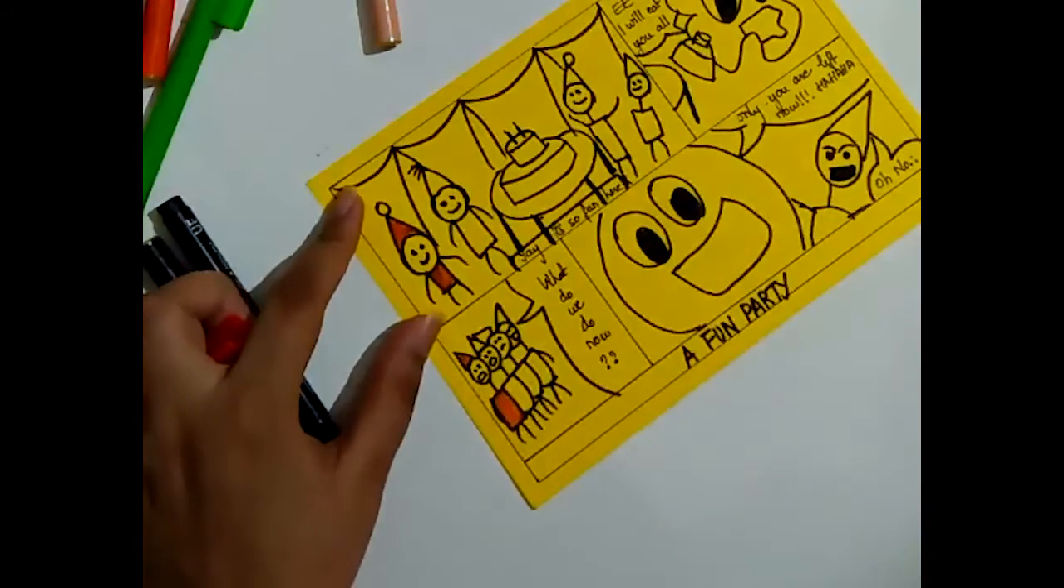Now we'll start coloring. One color for each friend so we can color all of that together. Also the mouth of the monster will be red. We'll color this also red or you can choose another color if you want. I'm just choosing a bright color as red looks better on yellow.